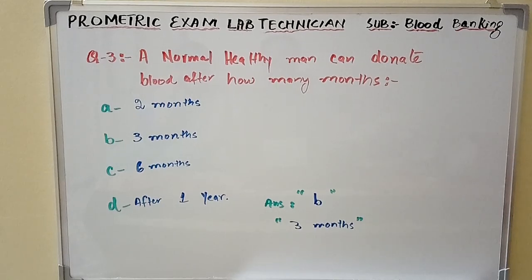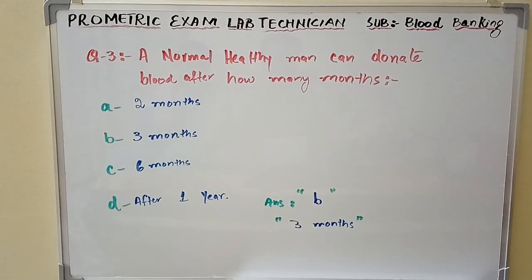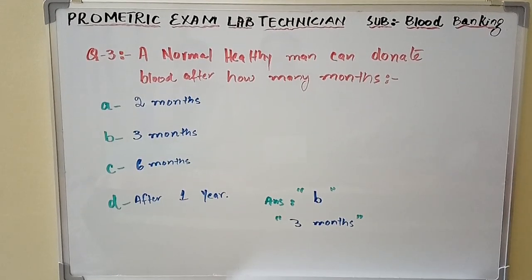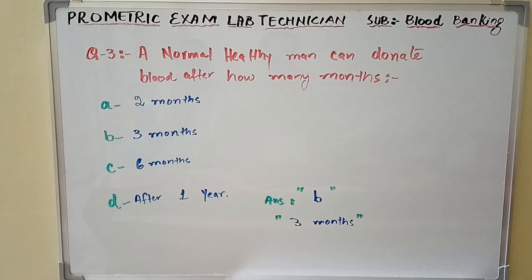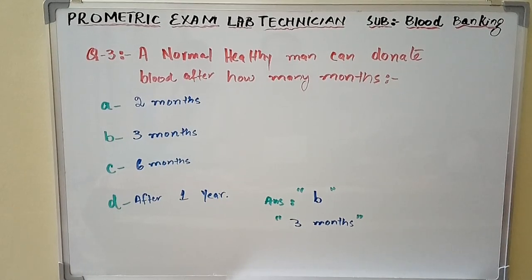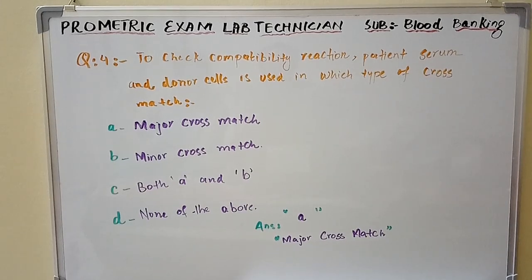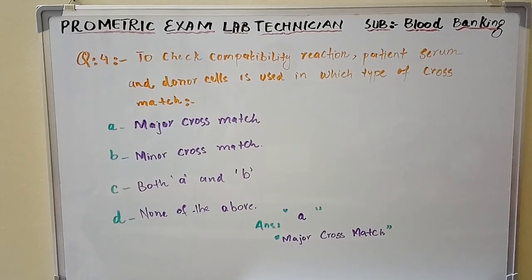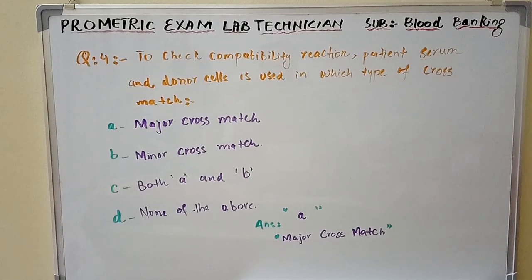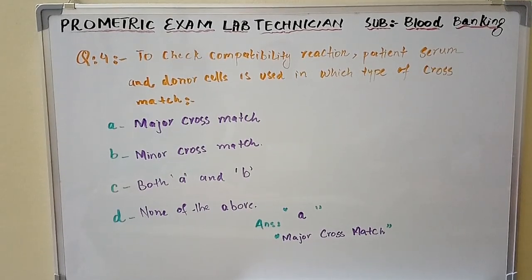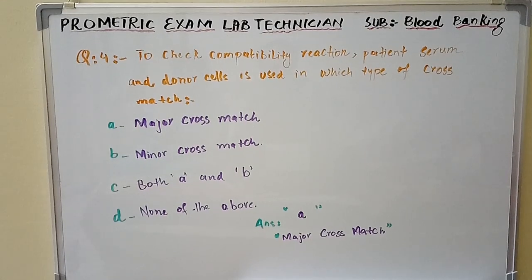Question number three: A normal healthy man can donate blood after how many months — the answer is Option B: after three months. Question number four: To check compatibility reaction, patient serum and donor cells is used in which type of cross match — the answer is Option A: major cross match.